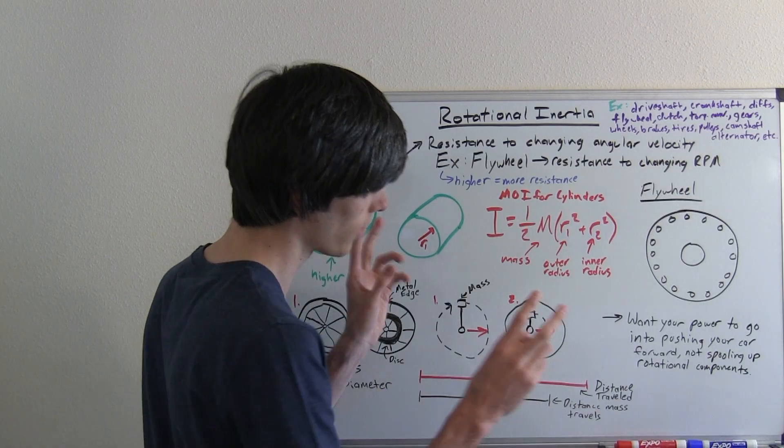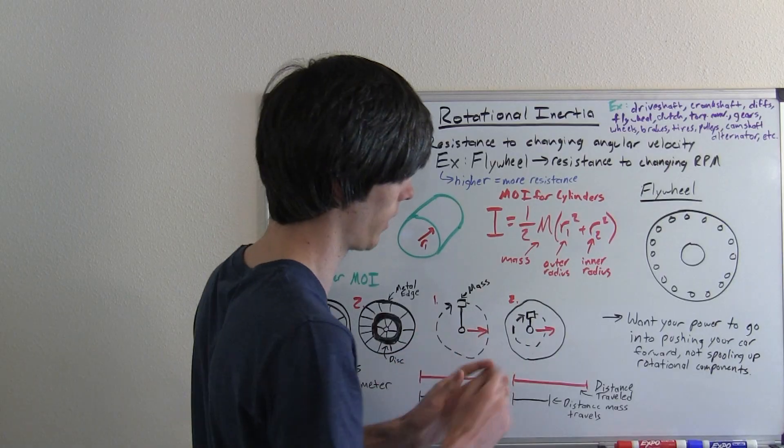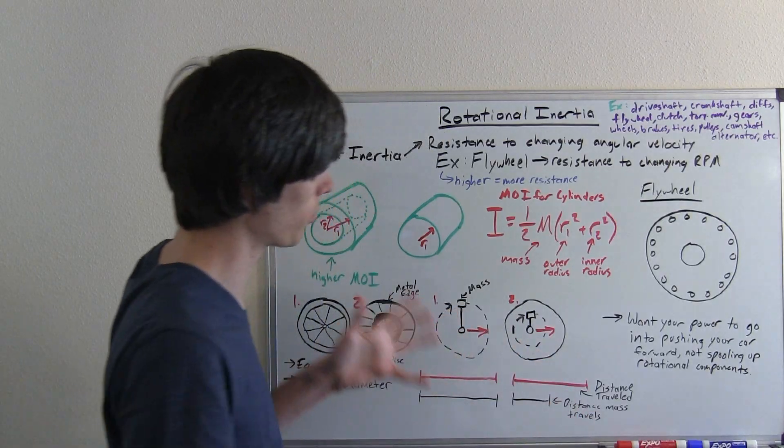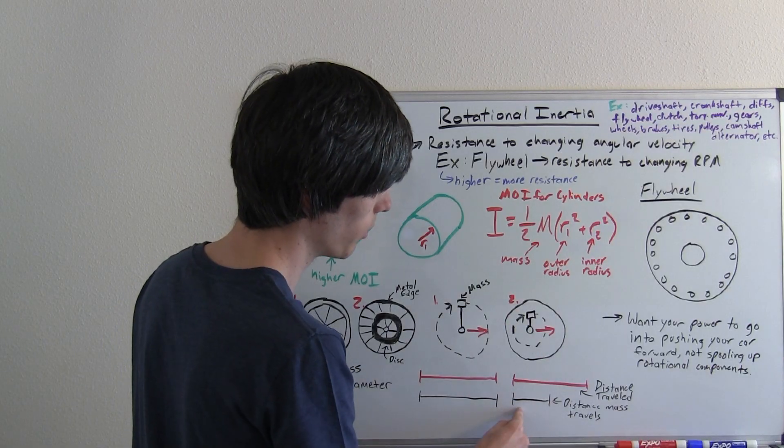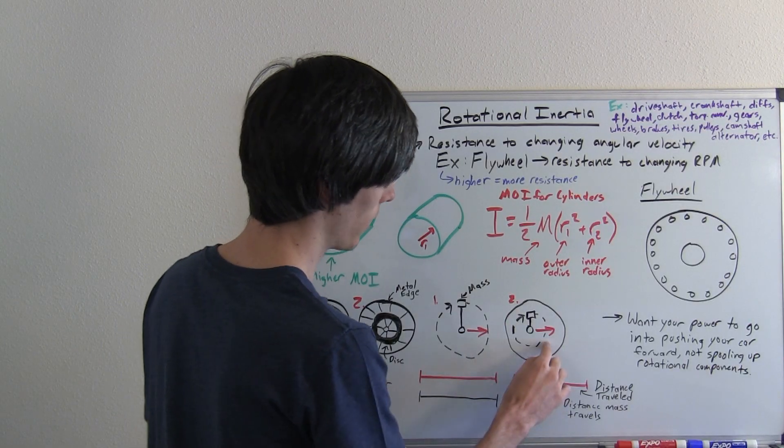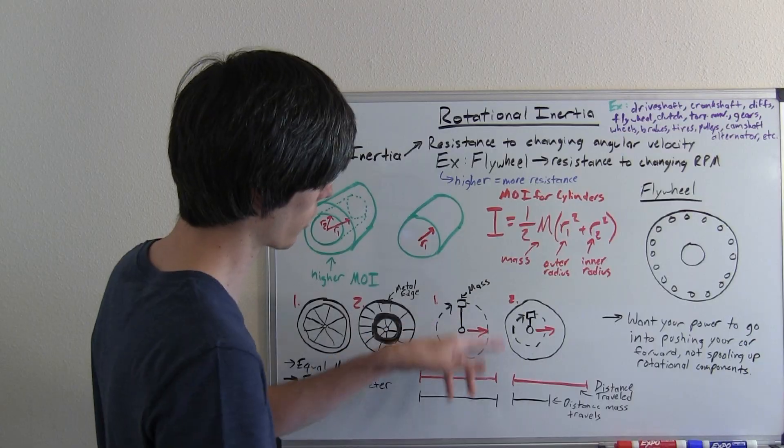By decreasing the distance that the mass travels, in a sense you're decreasing its moment of inertia, and it's easier to do less work, to move this less distance than to move this a greater distance.